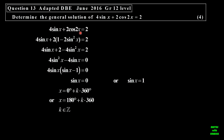We have 4 sine x plus 2 cosine 2x is equal to 2. I can then use the identity for cosine 2x, and because I have sine, I take the sine version. I expand that and there I get two terms. We can take out 4 sine x as a common factor. So sine x can be zero or sine x can be equal to 1. Sine x is zero at zero degrees and 180. I write the general solution there. For sine x equal to 1, the reference angle is 90. So it's 90 plus k times 360.